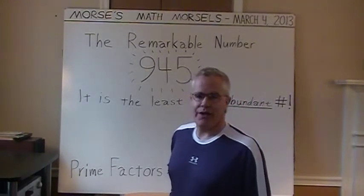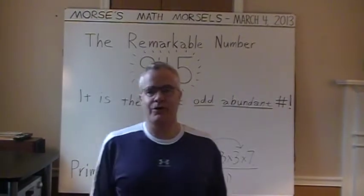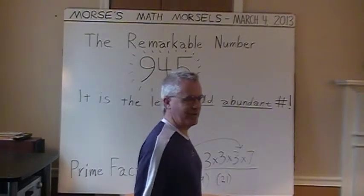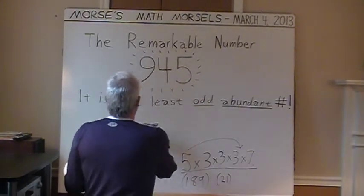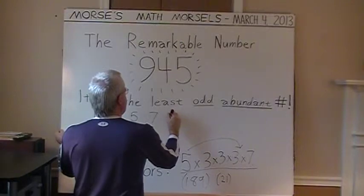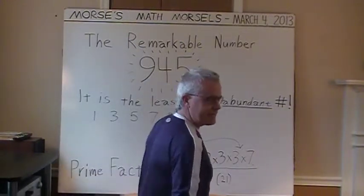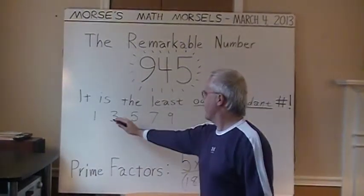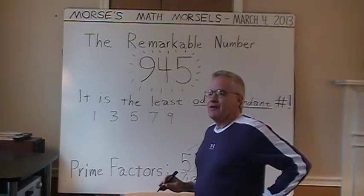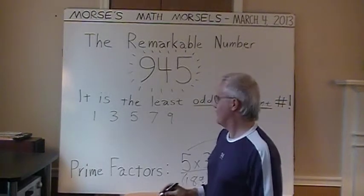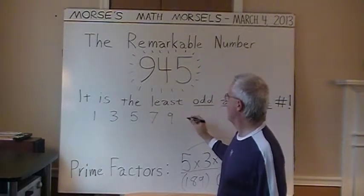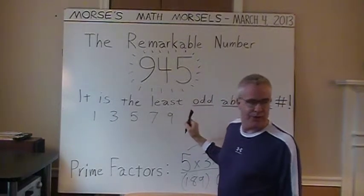On to the proper factors — all the numbers that divide 945 evenly, other than 945 itself, which is trivial. Those factors start with 1, 3, 5, 7, 9. I'll pause there because the product of these first five numbers happens to be 945. So an easy way to remember 945 is that it's just the product of the first five consecutive odd numbers. Continuing with the proper factors...